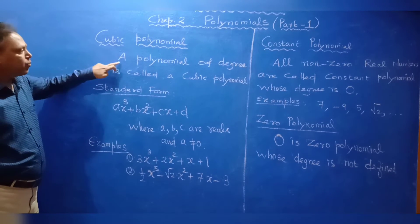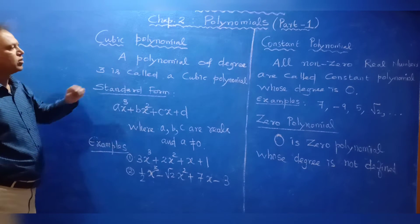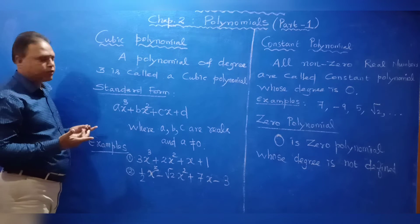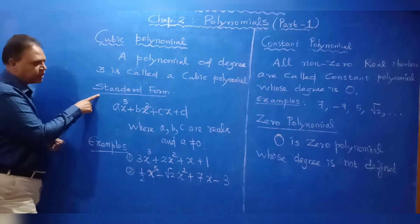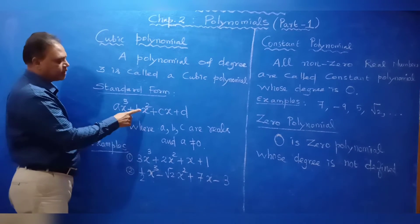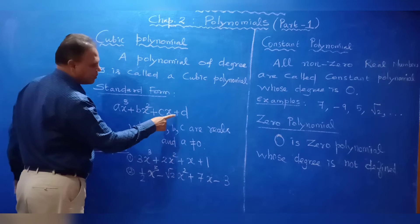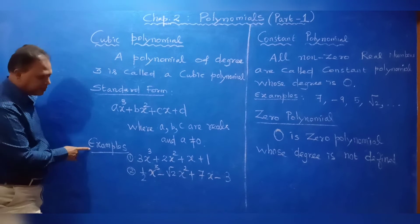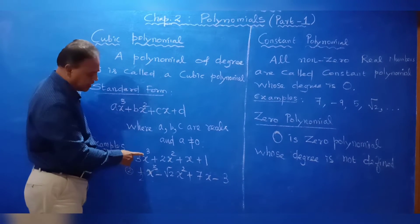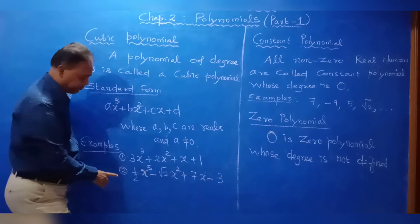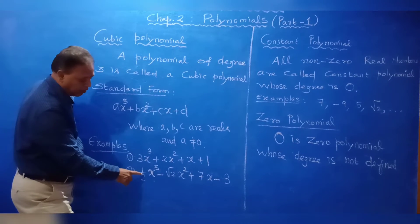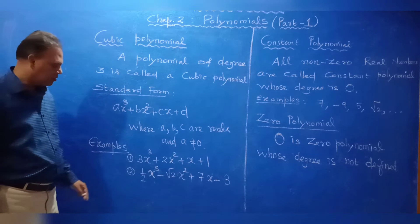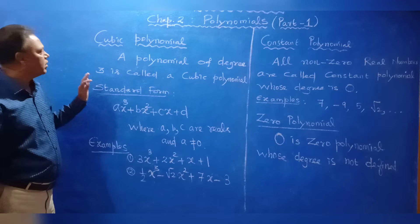A cubic polynomial is a polynomial of degree 3. Its standard form is Ax cubed plus Bx squared plus Cx plus D, where A, B, C, D are real numbers and A is not equal to 0. Examples: 3x cubed plus 2x squared plus x plus 1, and 1/2 x cubed minus root 2 x squared plus 7x minus 3.